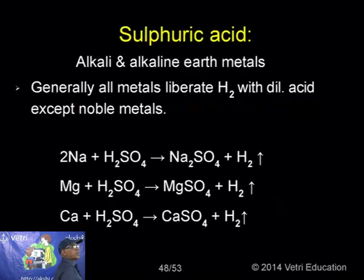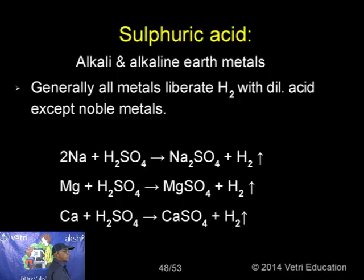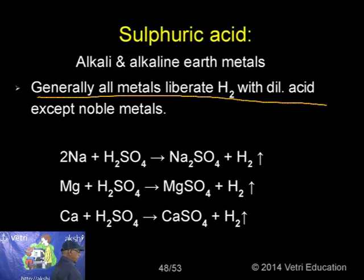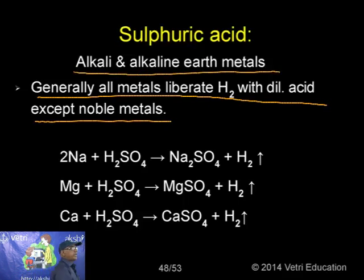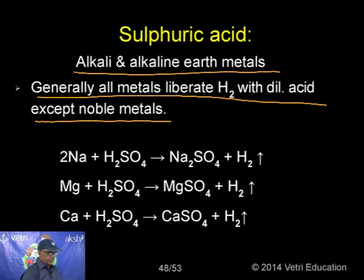Physical properties of sulphuric acid: it is a colourless dense oily liquid with a specific gravity of 1.84 at 298 K. It dissolves in water with the evolution of a large quantity of heat — it is an exothermic process. If you add sulphuric acid to water in the laboratory you can feel the heat generated.